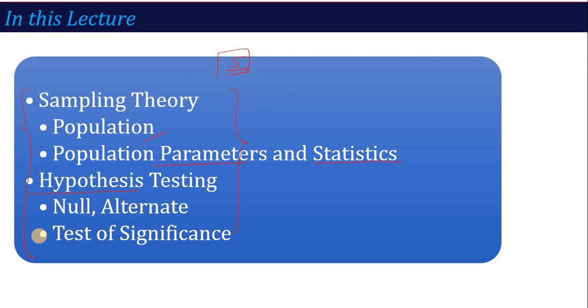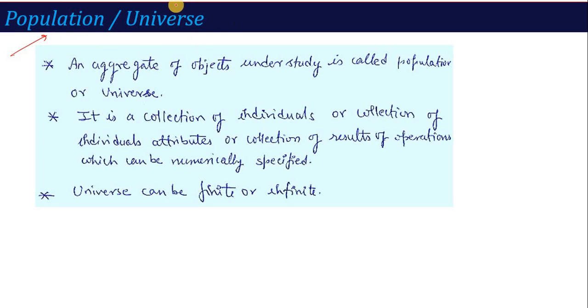The first term is population or universe. Population means which data you have to work on. You have to give a data set to find some characteristics from this data set. So the complete data set is called the population or universe.